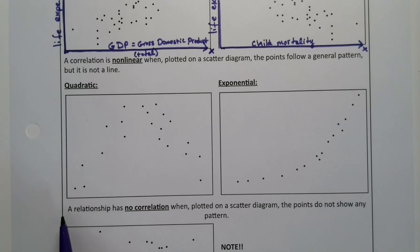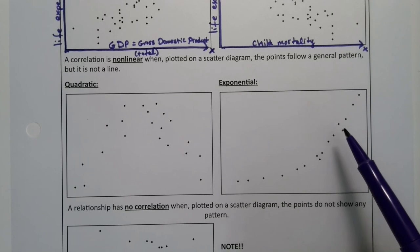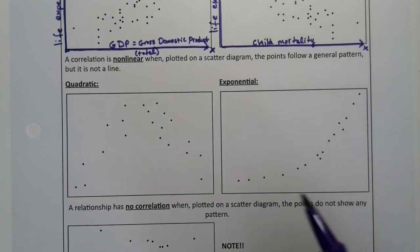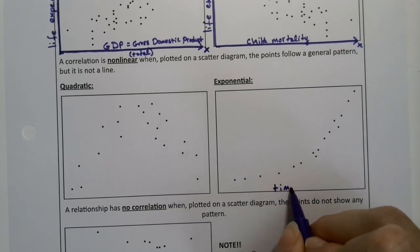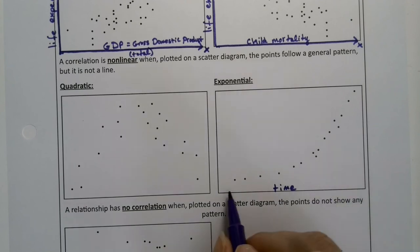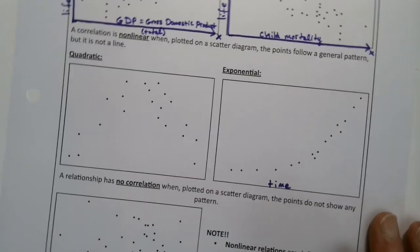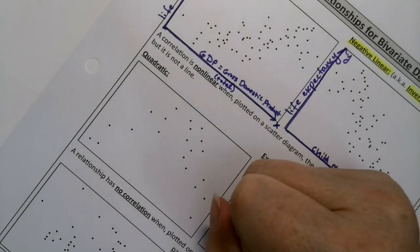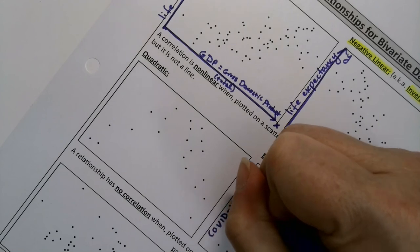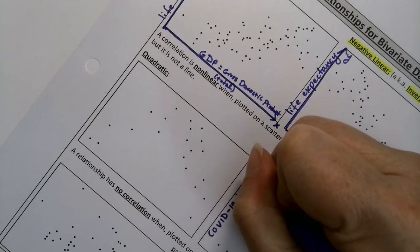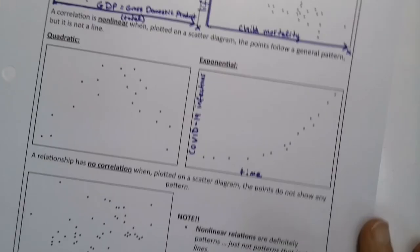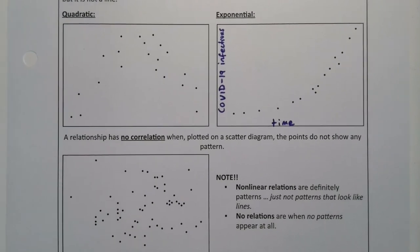Those would be quadratic, right? It goes up and goes back down. Exponential, which is curved, which means it's growing faster and faster, which is very scary. So for example, time here, say days, and then this would be COVID-19 infections. Because that was growing exponentially, as most viruses do, actually.